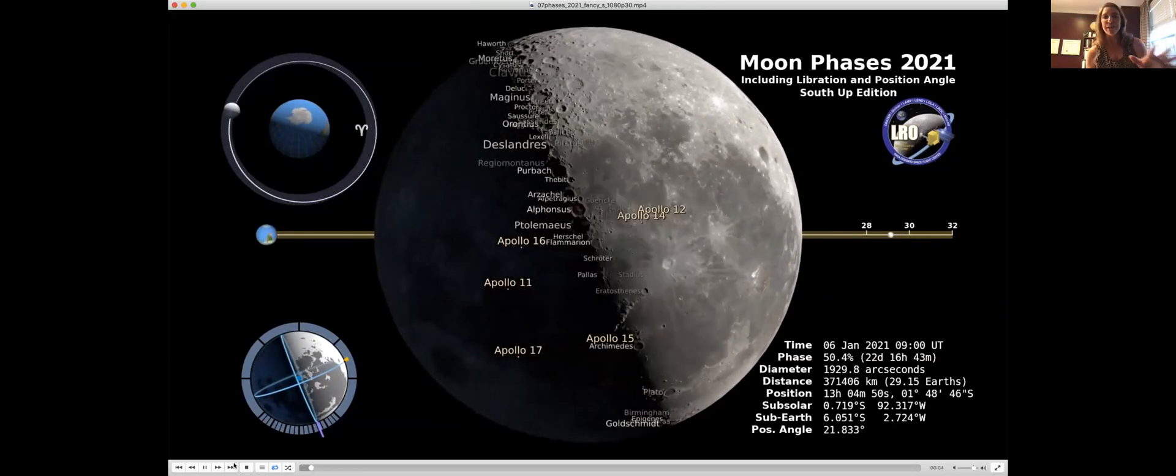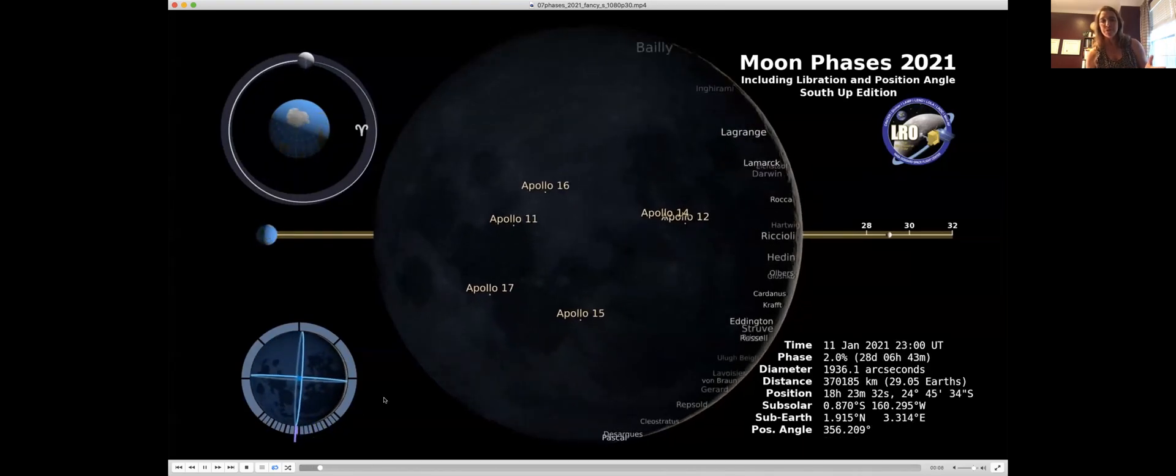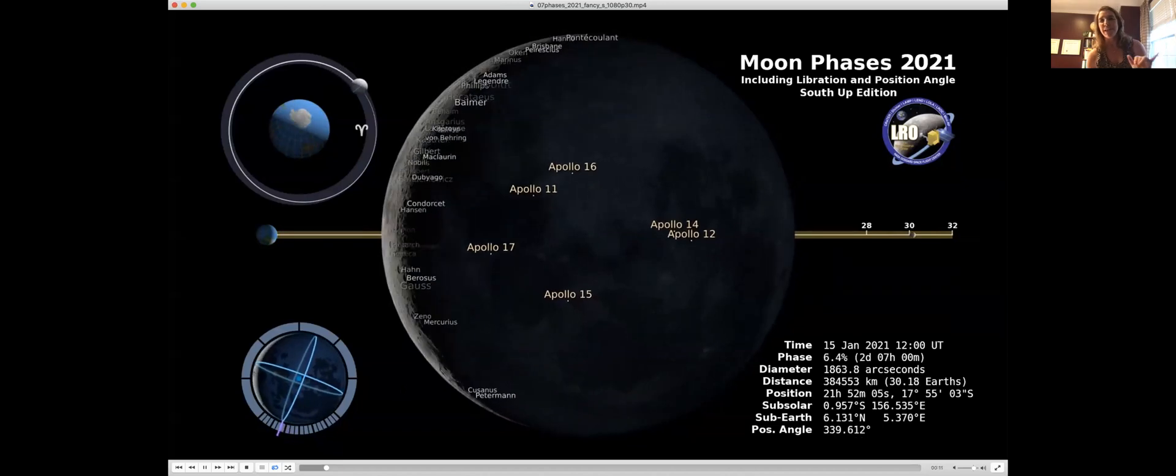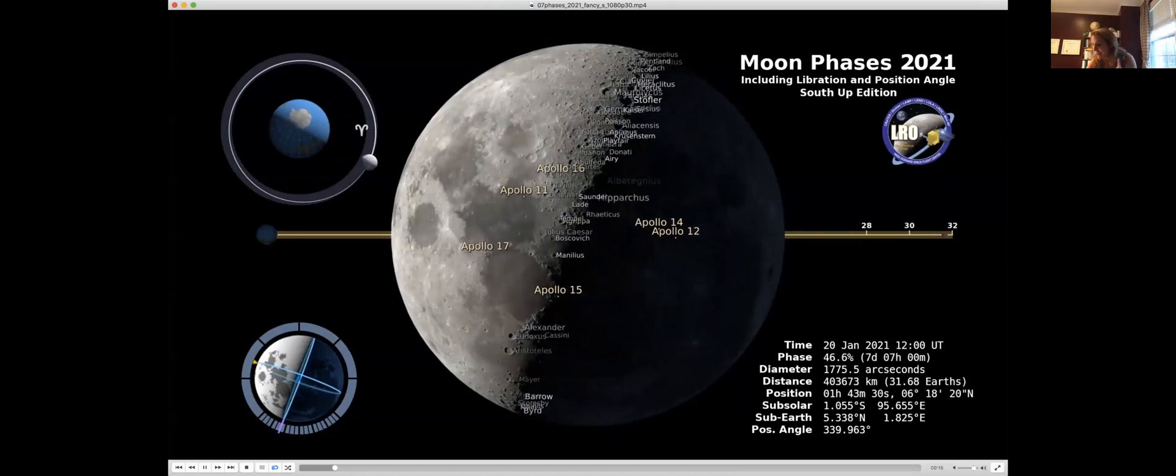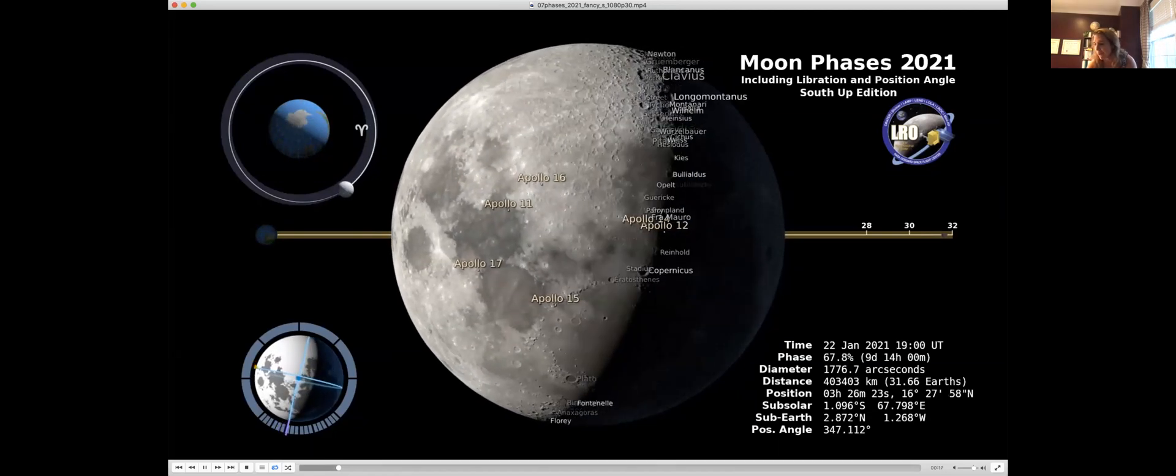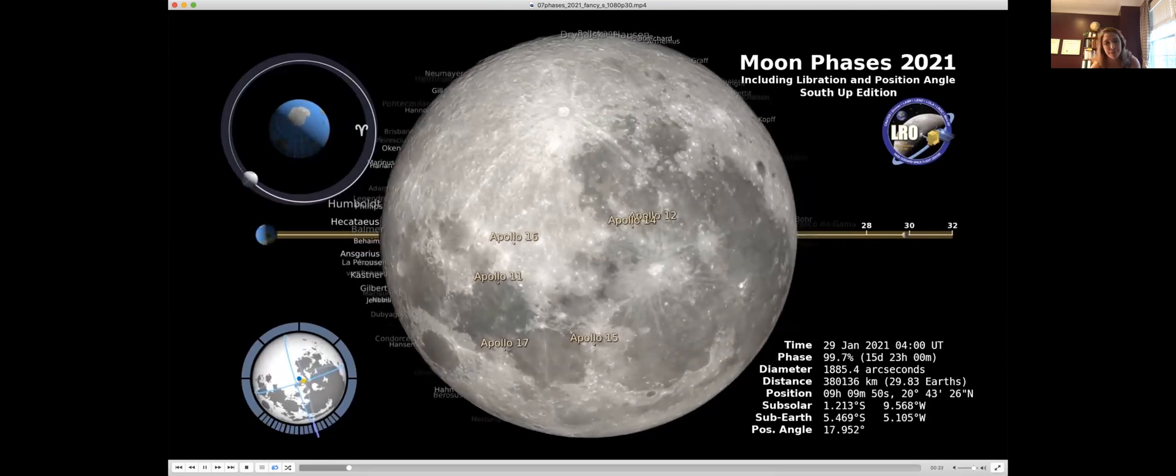We also, every year, we do a moon visualization. This isn't on our website yet, but it will be next week. The Imja Lake was 4834. The phases of the moon next week will be available. It's 4875.